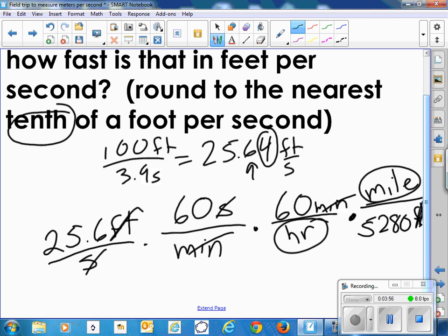So if I multiply 25.6 times 60 times 60, and then divide that by 5,280, that comes out to 17.45 miles per hour.